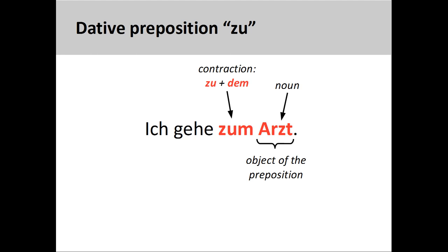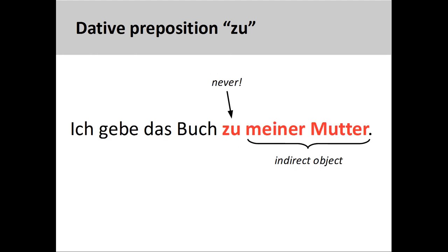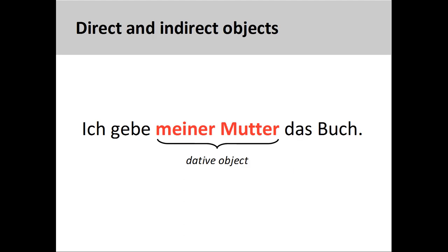The preposition zu is used to describe motion toward locations, people, and events. For example, ich gehe zum Arzt — I'm going to the doctor. Note that zum is the contraction of the preposition zu and the definite article dem. Zu is also used colloquially in ich bin zu Hause — I am at home. Finally, it is tempting to use zu to mark the indirect object of a sentence, as in ich gebe das Buch zu meiner Mutter — you must never do this. Instead, use of the dative case by itself is enough to mark the indirect object: ich gebe meiner Mutter das Buch — I give the book to my mother.